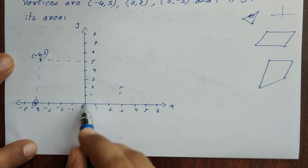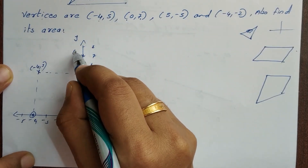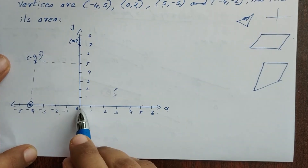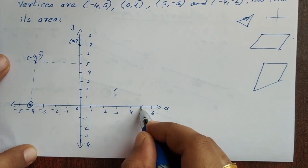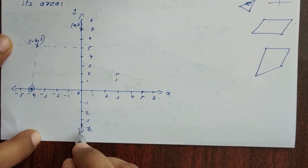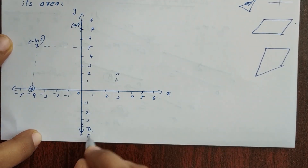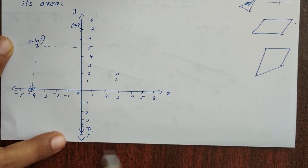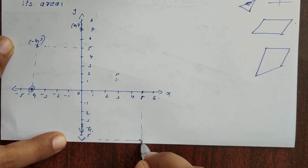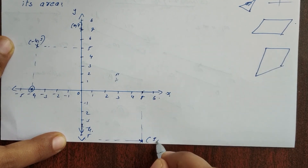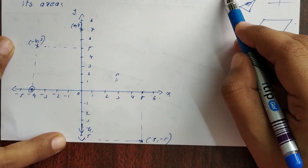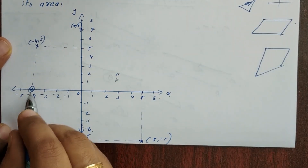Now, zero seven. This is zero, seven. Then five, minus five — five is here on the x-axis, and minus five on the y-axis. So this is five, minus five. Then this is minus four, two — that is minus four, minus two.